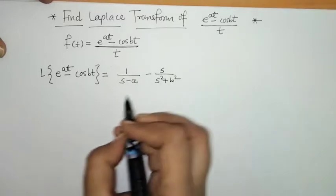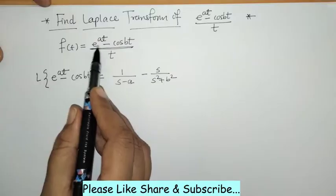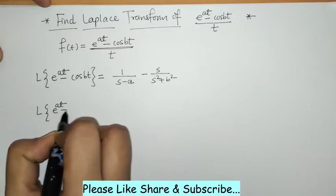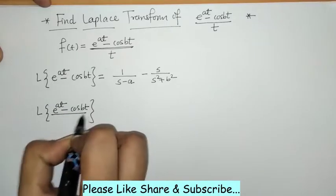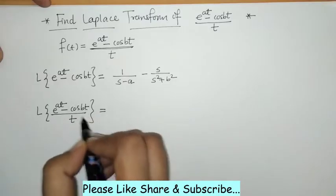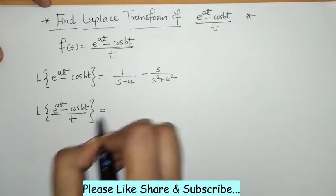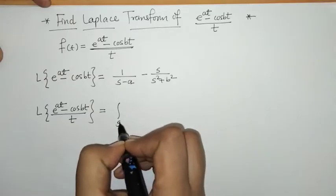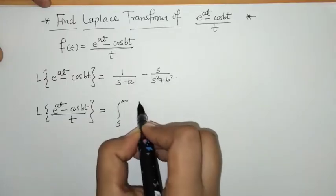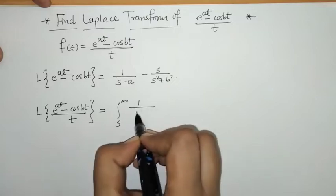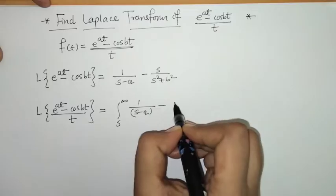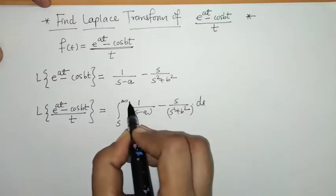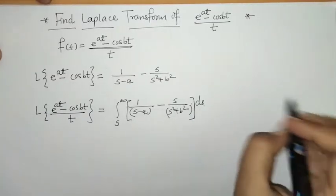Next, we want the Laplace of the entire function divided by t — that is, the Laplace of (e^(at) minus cos(bt))/t. By the effect of division by t, we have to find the integral from s to infinity of [1/(s minus a) minus s/(s² plus b²)] with respect to s.